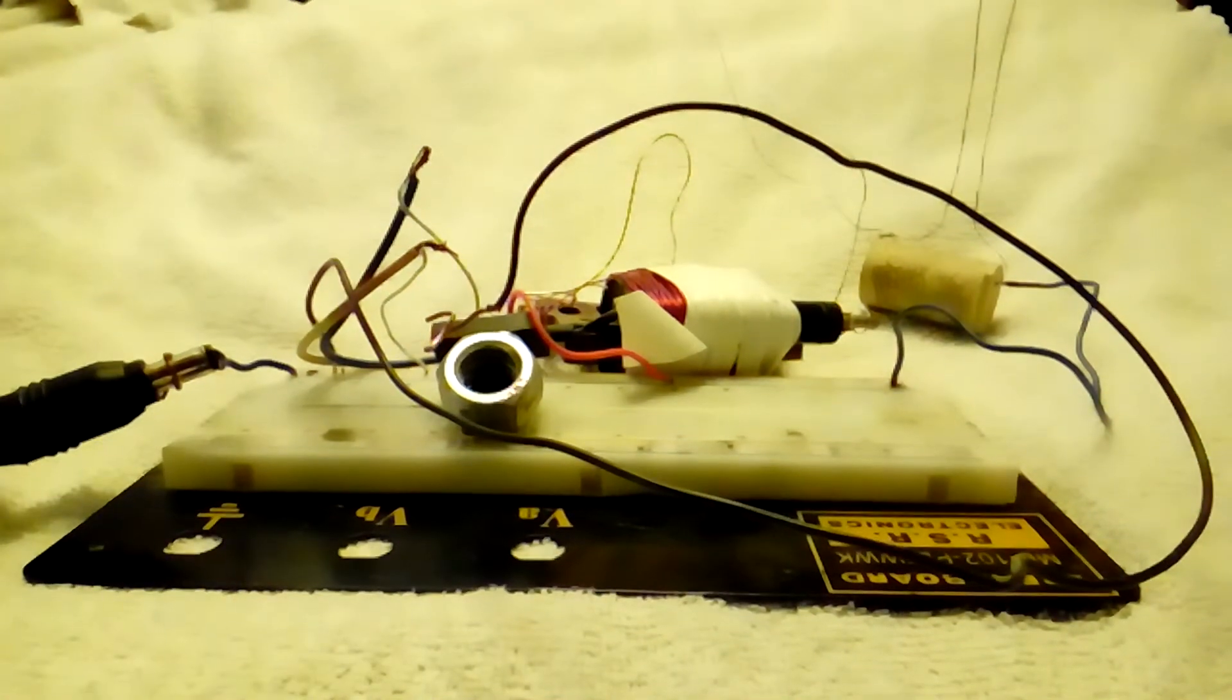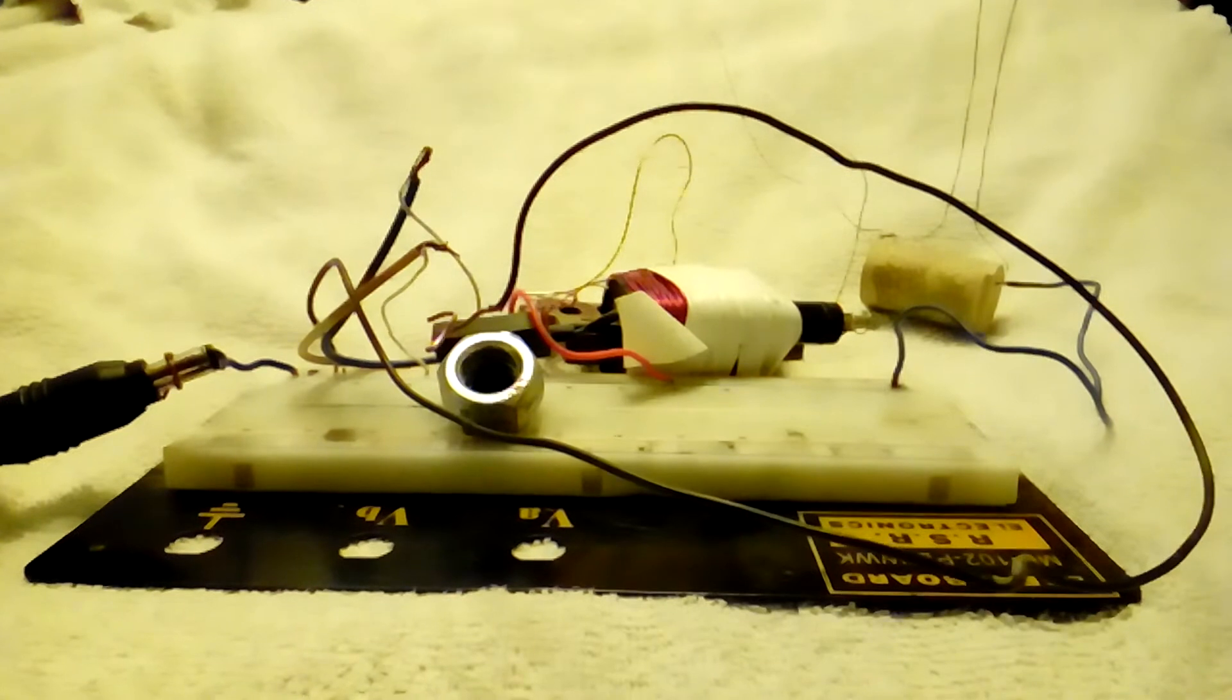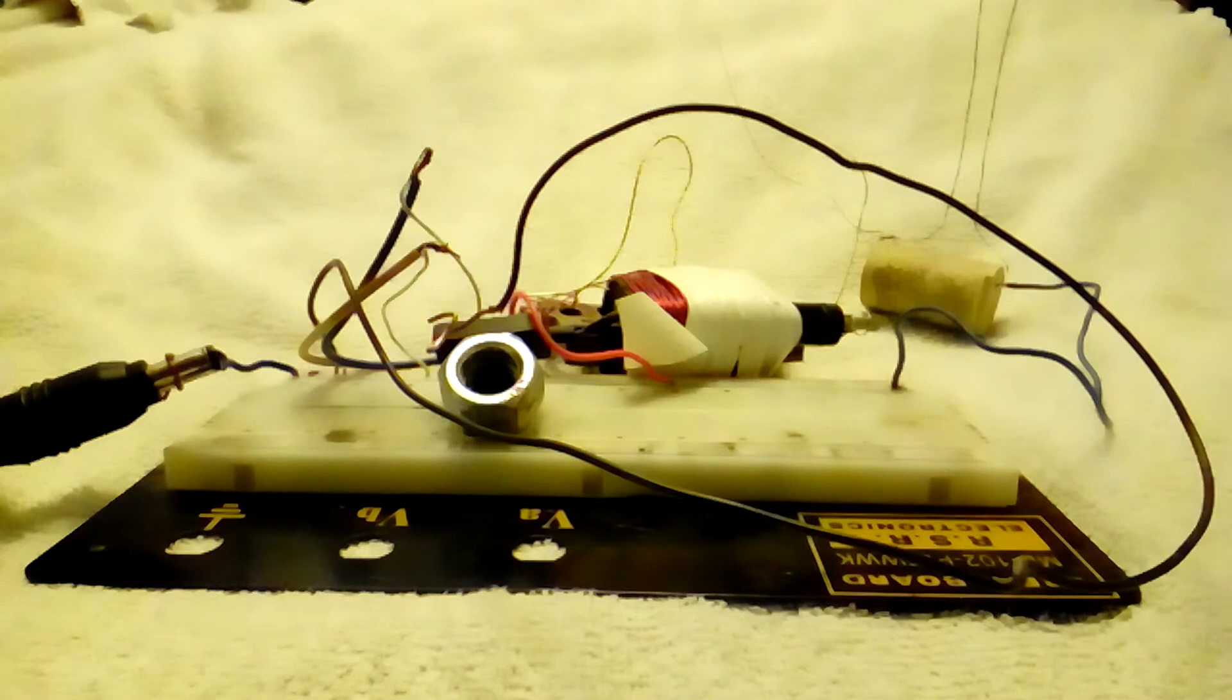There's a load I have, what some people call a Jacob's Ladder. Basically, there's two thin steel wires that are close together at the bottom and slant away from each other as they go up.